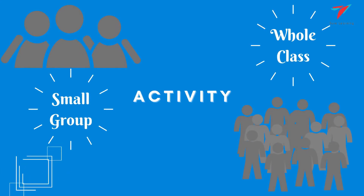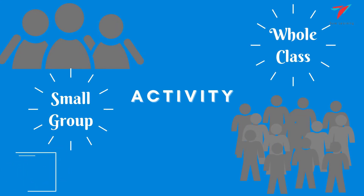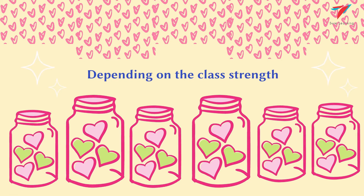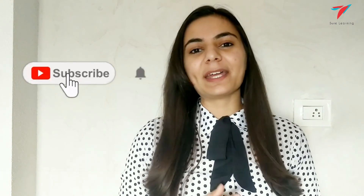Fractions Cookie Jar is an equivalent fraction sorting activity — a great small group or whole class activity to consolidate students' understanding of equivalent fractions. Print and laminate the cookie jars and the cookies. You can make four to six jars depending on the class size. Provide each student with a cookie, and as a class, sort the cookies into the correct cookie jars according to equivalence.